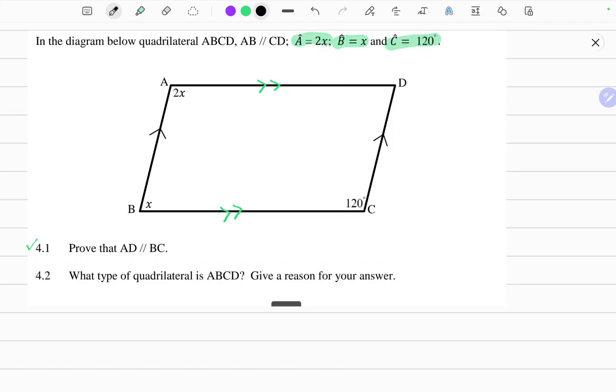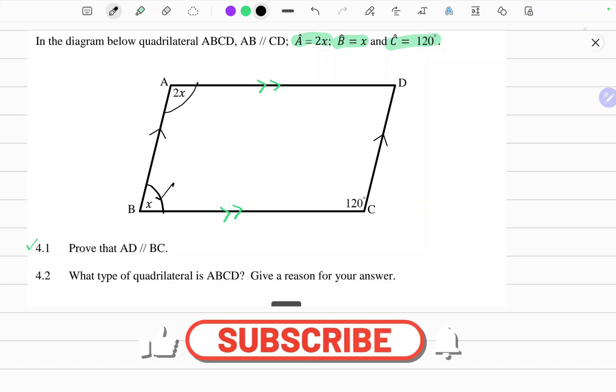So in other words, we need to prove that this angle 2x and x are co-interior angles. In other words, they add up to 180 degrees. To prove they add up to 180 degrees, the first thing that we need to do is we need to find the value of x.